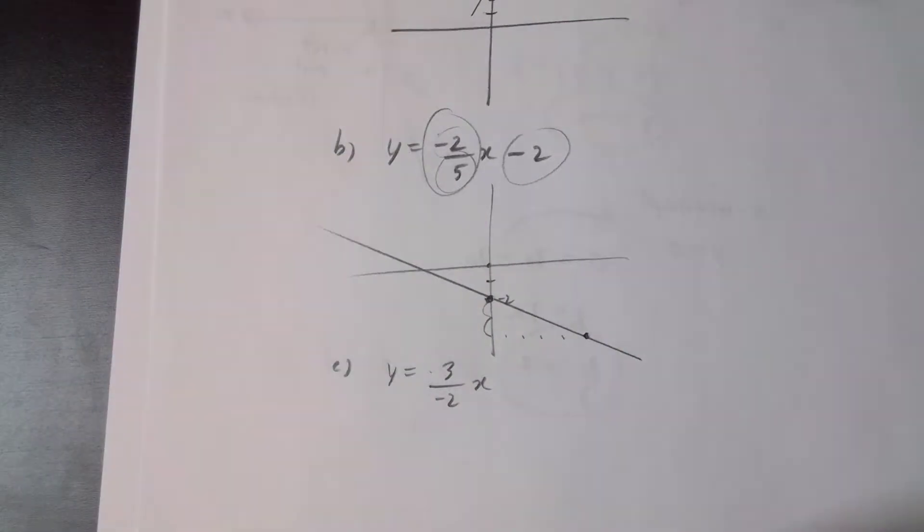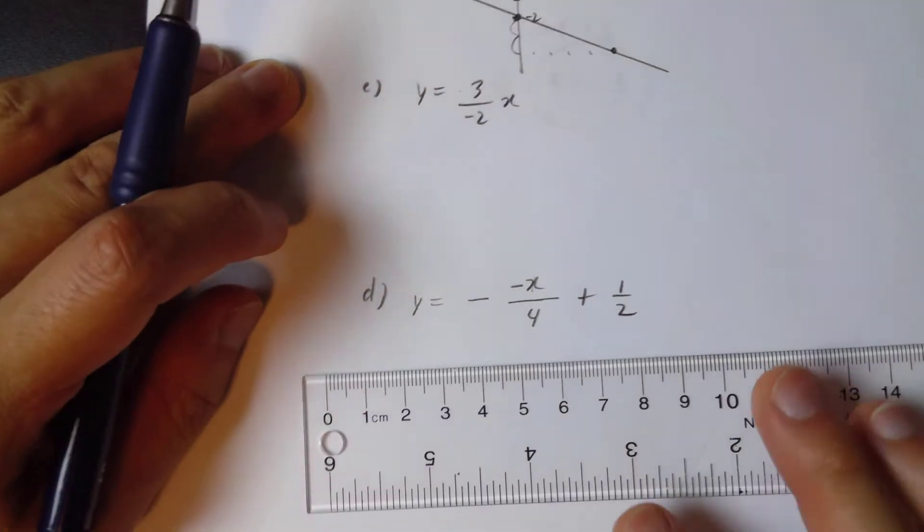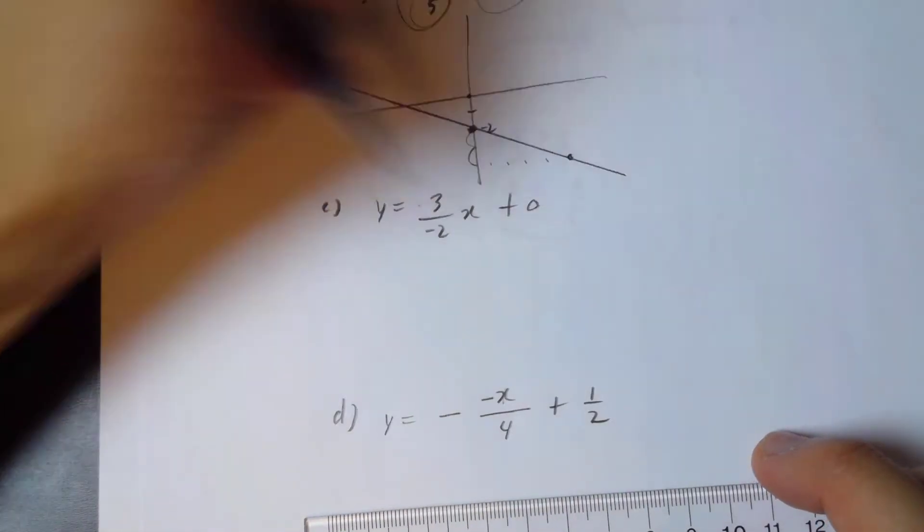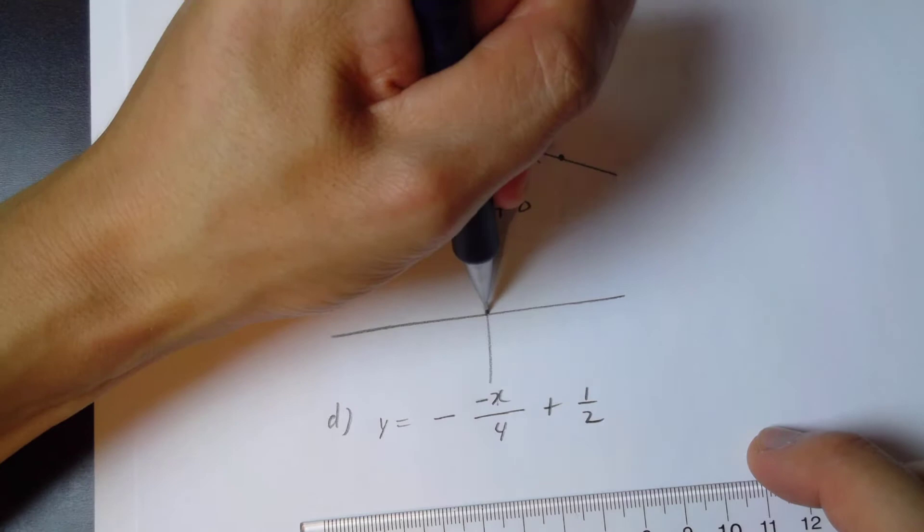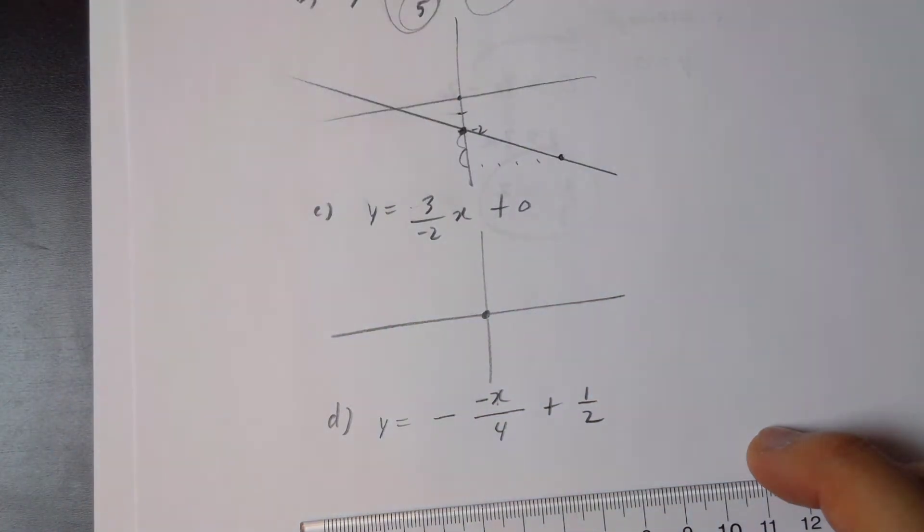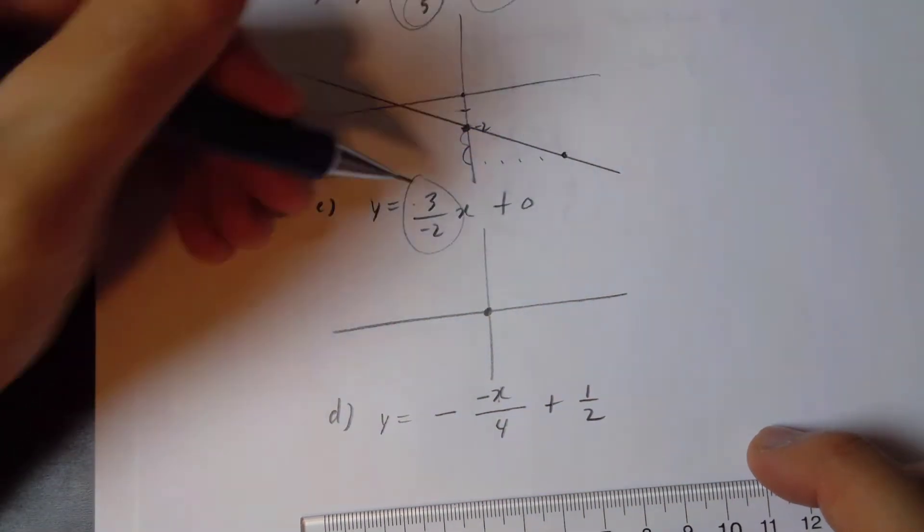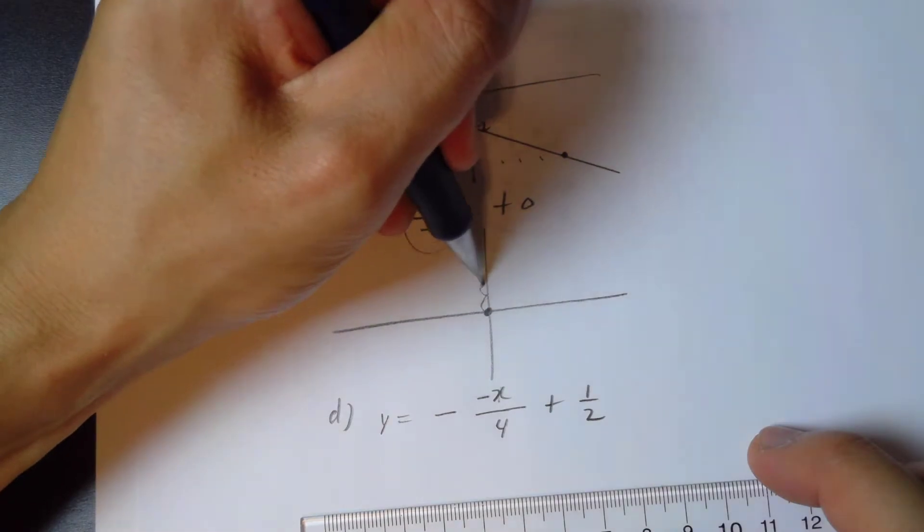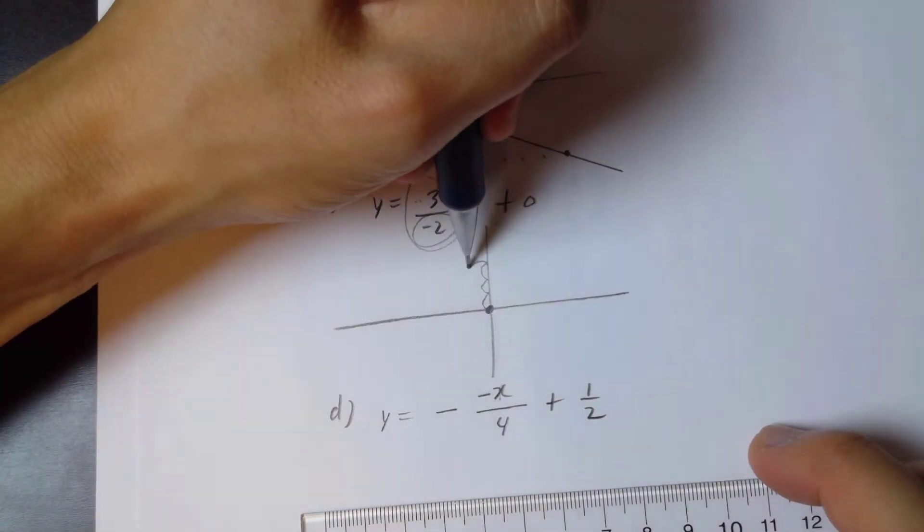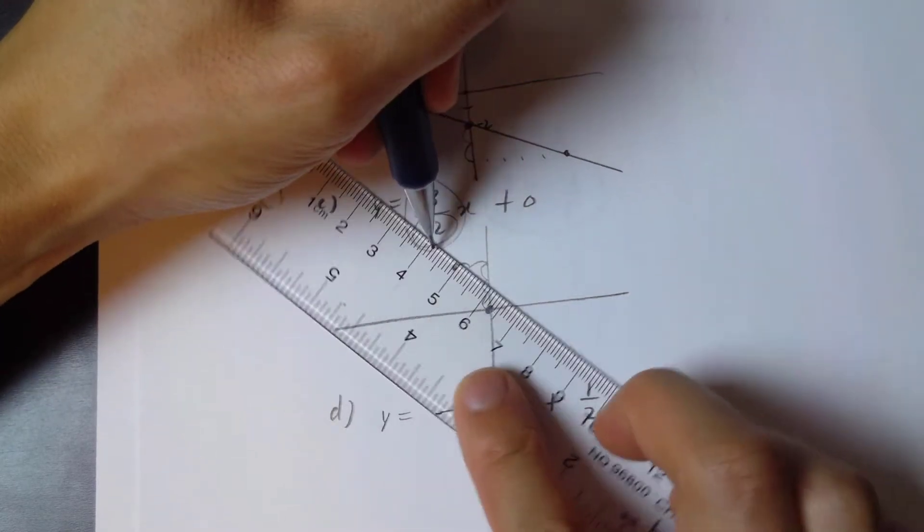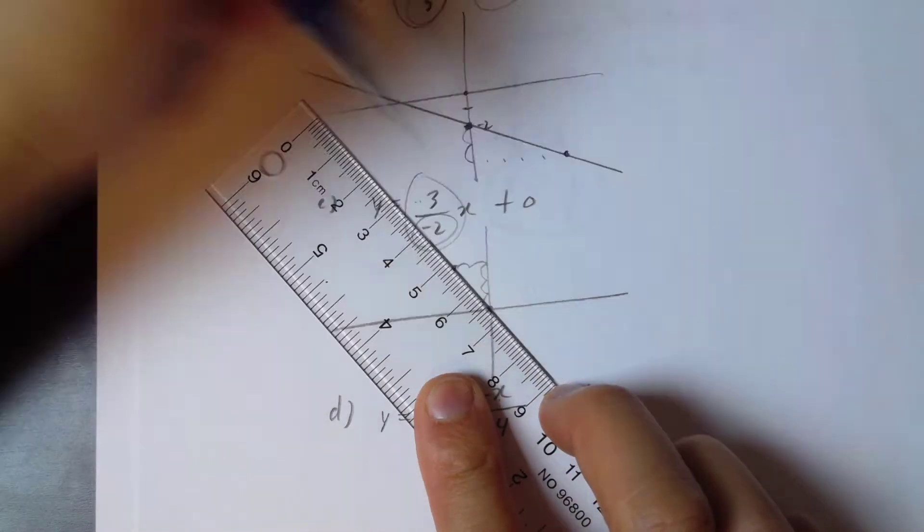Now let's move on to c. The intercept is like plus zero, it's nothing, there's nothing there, so we know that it's going to go through the origin over here. This is zero. The slope here is rise three up, one, two, three, and the run is going to be negative two, which means two to the left. So we're going to connect the dots. It's going to look something like that.